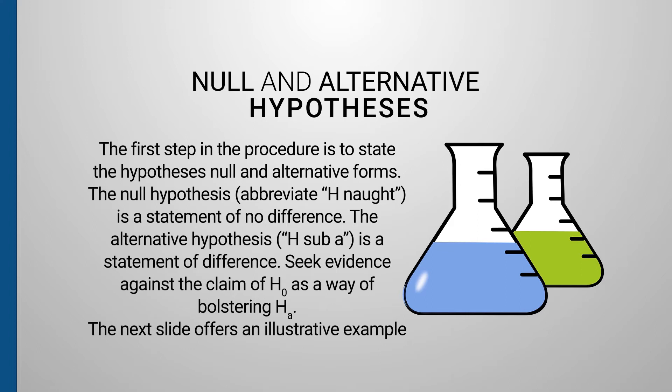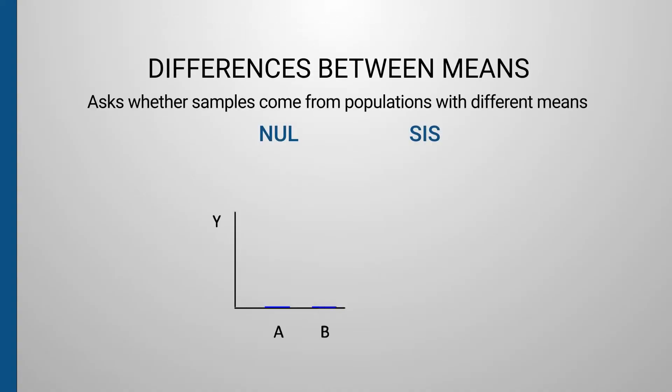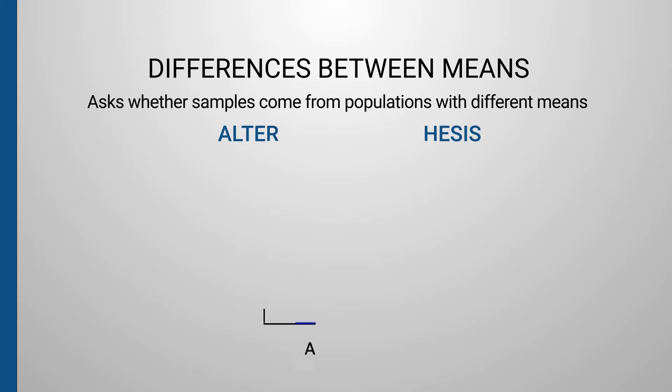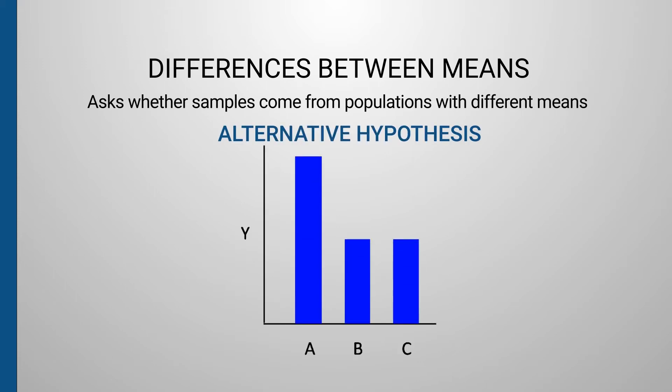The first step in hypothesis testing is to state the hypothesis in null and alternative forms. The null hypothesis (H₀) is a statement of no difference; the alternative (H₁ or Hₐ) is a statement of difference. In a bar chart comparison, if you see three similar bars labeled A, B, and C, that represents the null hypothesis — all groups are identical. Under the alternative hypothesis, the size of group A is larger compared to B and C.